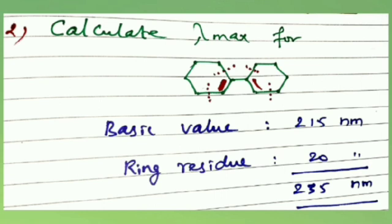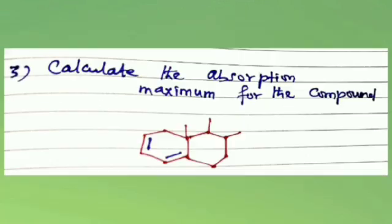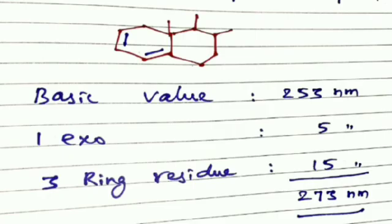Third example: calculate the absorption maximum for the compound. The compound has a homoannular diene system, so the basic value is 253 nanometers. One exocyclic double bond adds 5 nanometers. Additional ring residues are counted and added. The total calculated lambda max is 273 nanometers.